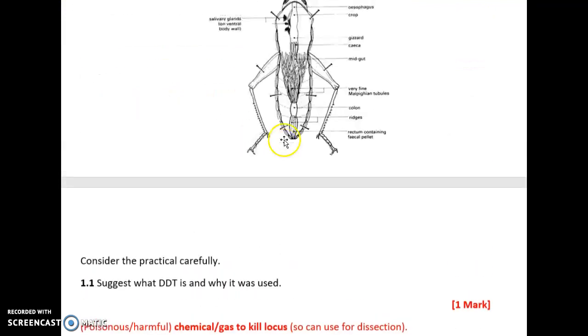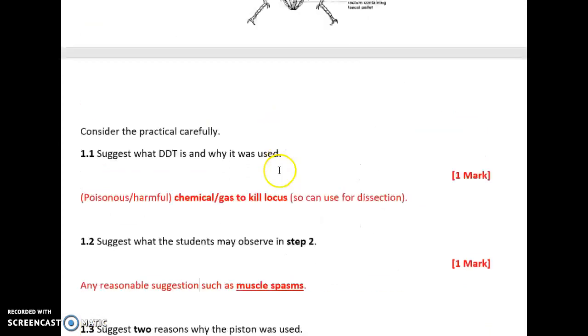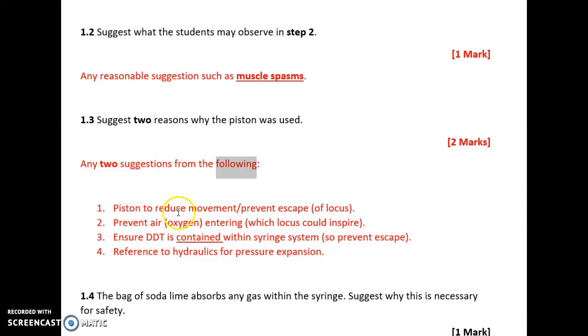Suggest two reasons why the piston was used. If we look at the figure, why do we think the piston needed to be used? Perhaps the piston is used to prevent the locus from escaping, or it contains the DDT gas, or it allows for pressure expansion. Some of the reasons I had were: piston to prevent movement or escape of insect, prevent air entering, ensure DDT is contained within the syringe system, and any reference to hydraulics or pressure expansion.